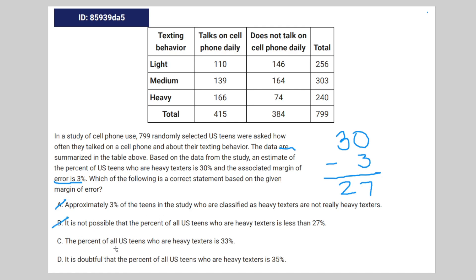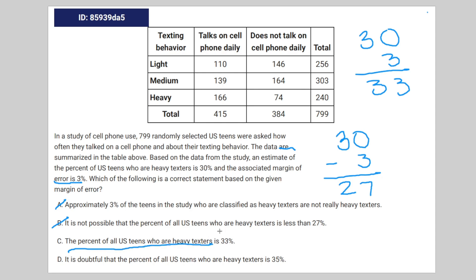Answer C says the percent of all U.S. teens who are heavy texters is 33%. With a margin of error of 3%, 33% is possible, but it's not definitive — that's the whole point of a margin of error. The answer varies, and this statement is way too matter-of-fact for a margin of error question. Therefore, C is not the correct answer.